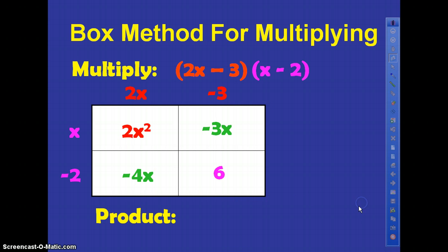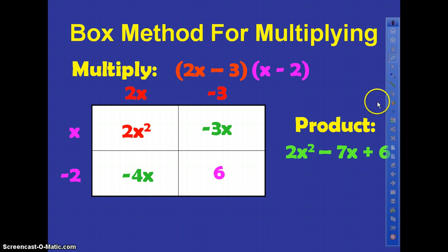So now that we've multiplied this all out, we're just going to drag all those numbers out of the box, and then we are going to combine like terms. And our final answer is 2x squared minus 7x plus 6.